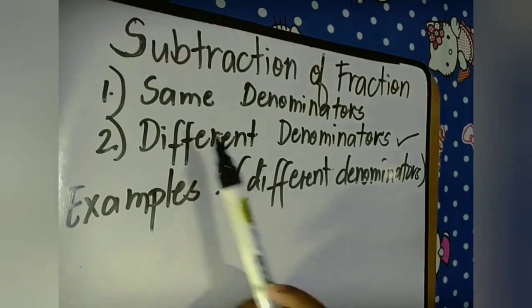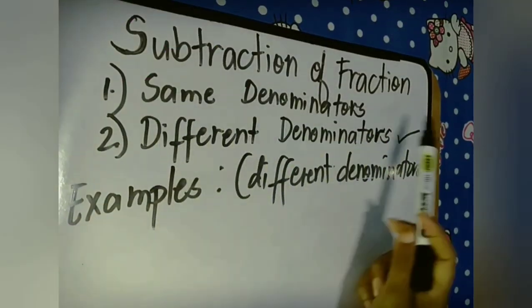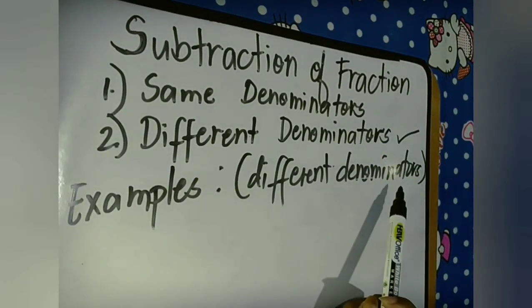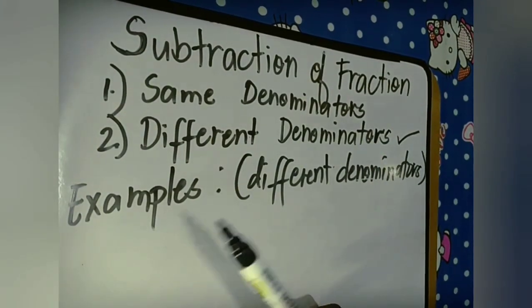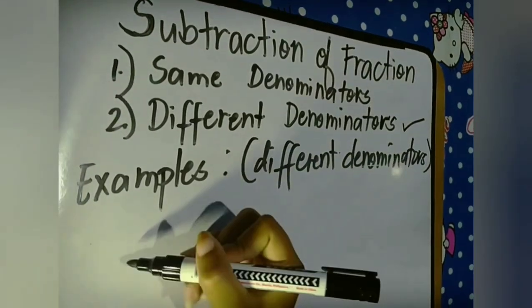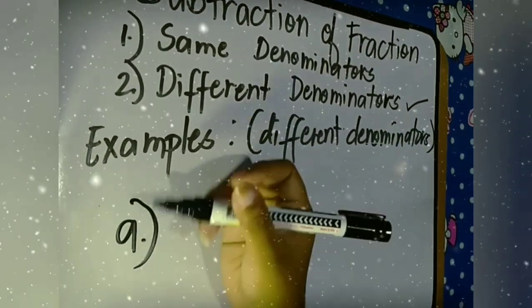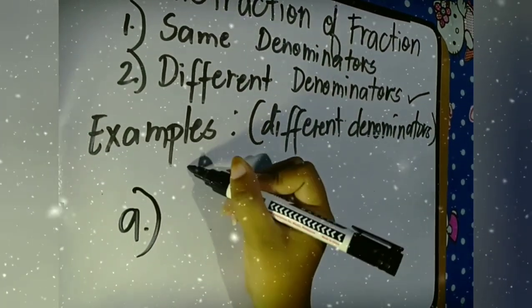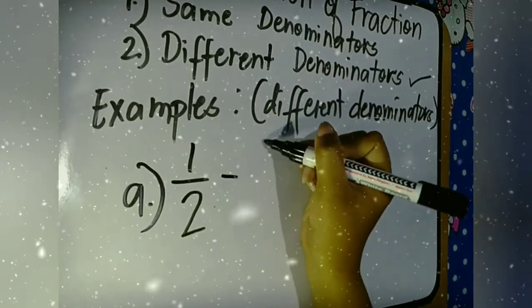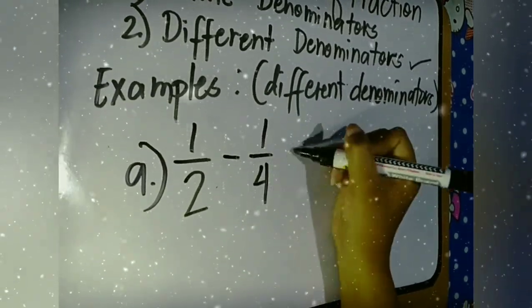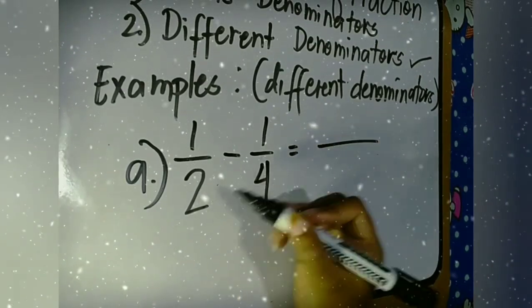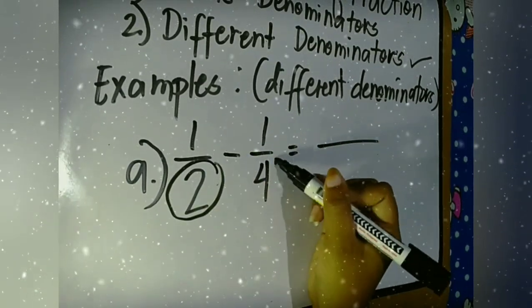Hello everyone, today we will discuss subtraction of fractions. Since we were discussing same denominators before, now it is different denominators. Let's have an example — Example A: one half minus one fourth. What is the answer?